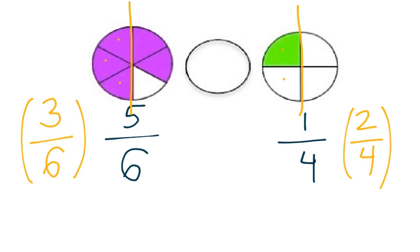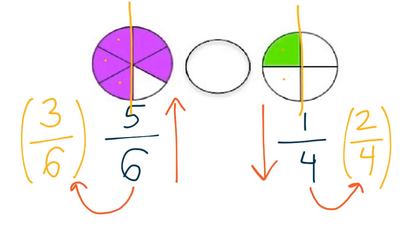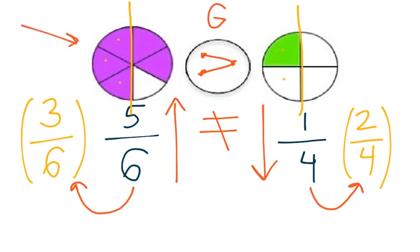So, I compare my fraction to the half. 5 sixths compared to 3 sixths — I know 5 sixths is greater than 3 sixths, so I draw an up arrow. Next, I'm looking at 1 fourth, and I'm comparing it to 2 fourths. I know that 1 fourth is less than 2 fourths, so I put a down arrow. I know one fraction, 5 sixths, is greater than 1 half, and the other fraction, 1 fourth, is lower than 1 half, which tells me that 5 sixths is my greater fraction. So, 5 sixths is greater than and not equal to 1 fourth. You can also use the pictures here to help — on 5 sixths, you can see that the purple has so much more shaded in than the green on 1 fourth.